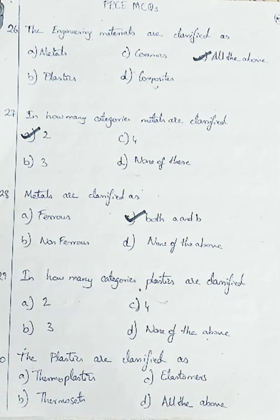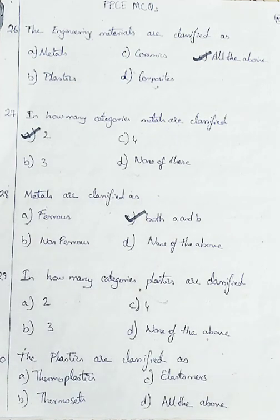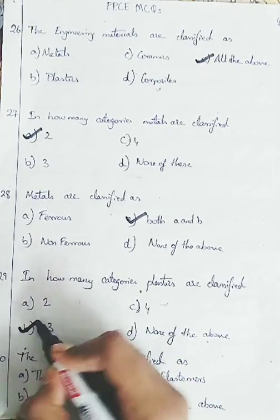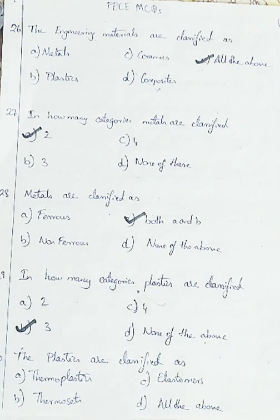In how many categories are plastics classified? Plastics are classified as 3 categories: thermoplastics, thermosets, and elastomers. Option A: 2, Option B: 3, Option C: 4, Option D: none of the above. So we are going with Option B, that is 3.